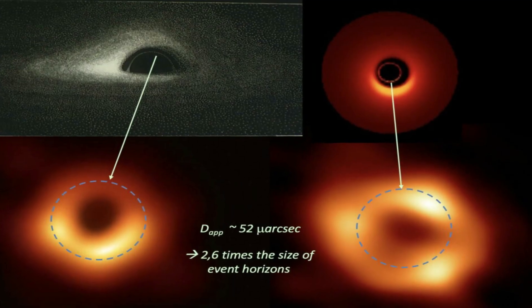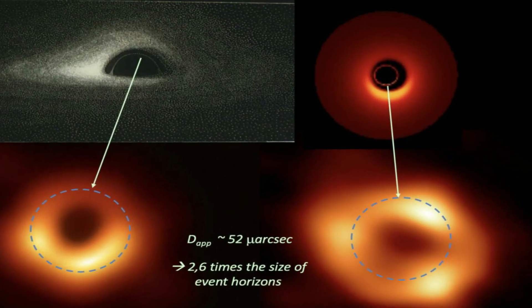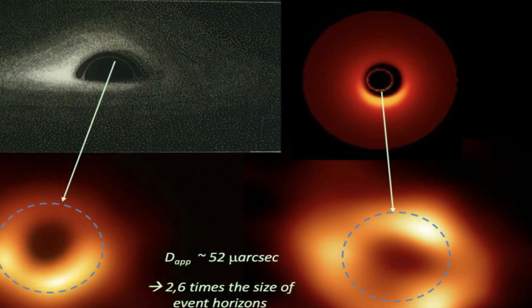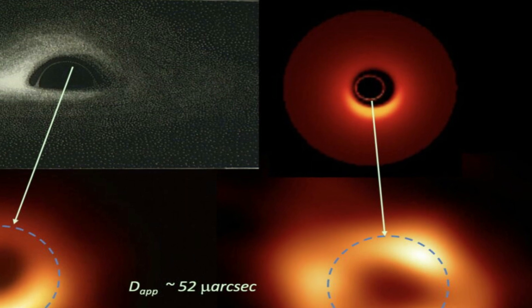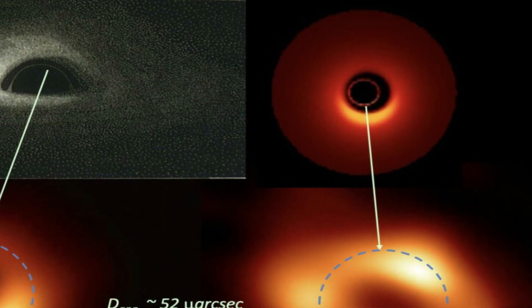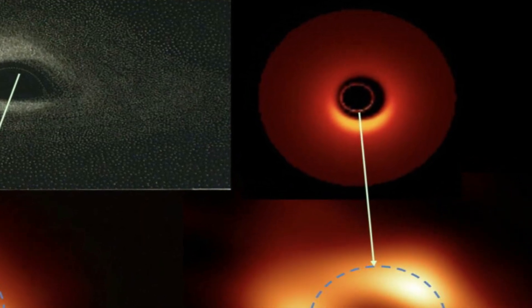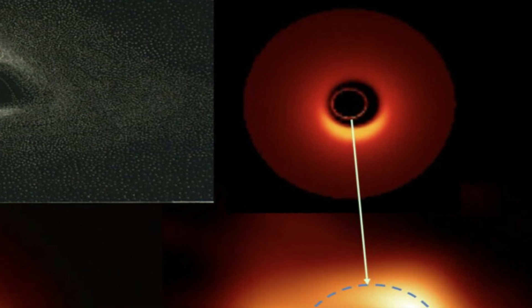The first image of a black hole was captured in 2019 by the Event Horizon Telescope collaboration. The striking photo of the black hole at the center of the M87 galaxy, 55 million light-years from Earth, thrilled scientists around the world.